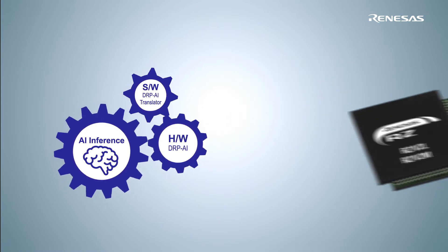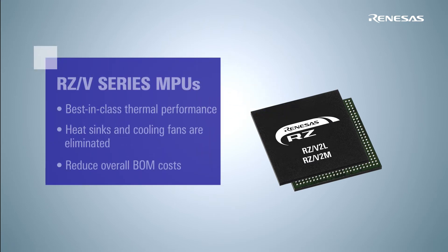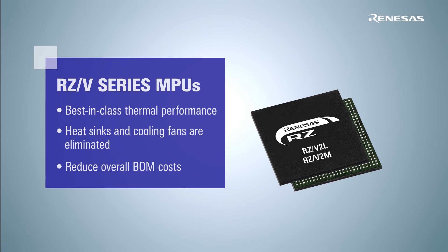The DRP-AI Accelerator is embedded in the RZ-V series microprocessors, providing best-in-class thermal performance. Due to the low power consumption of DRP-AI, heat sinks and cooling fans are eliminated, enabling users to build more compact devices and reduce overall BOM costs.